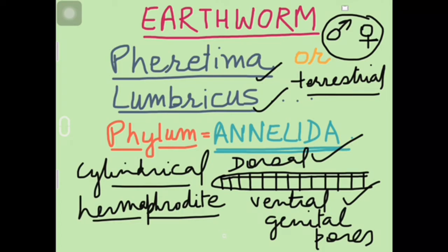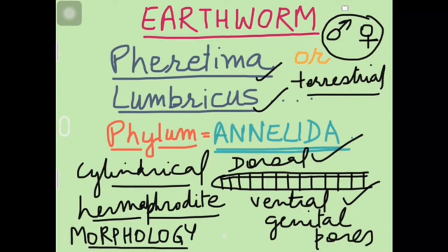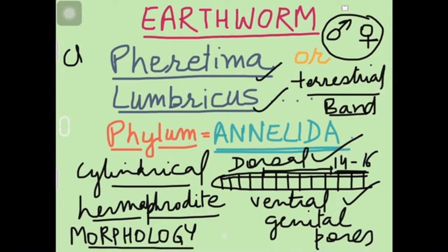Iski burrowing habit hoti hai. Jho abhi hum ne padha hai woh morphology of this animal hai. Study of external features of any organism is called its morphology. 14 to 16 segment ke beech mein, agar aap 14 se leke 16 segment gino, toh uske beech mein ek band hoga, dark color ka band alag se nazar aayega. Jis ko bolte hai clitellum. Yeh bhi iski pehchan hai.